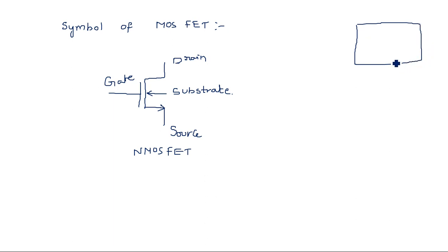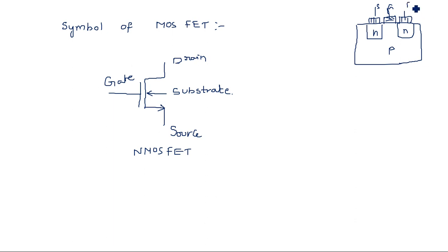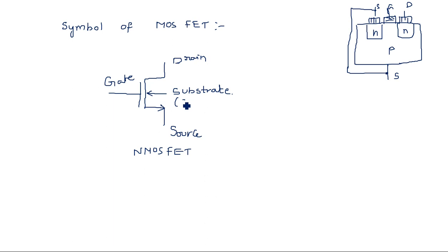In addition to the three terminals — gate, drain, and source — we also have a substrate terminal, which is used to bias the transistor. In the constructional view: this region is n-type, this is n-type, and this is p-type, with the gate terminal here. Most commonly, substrate and source are short-circuited.